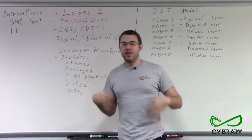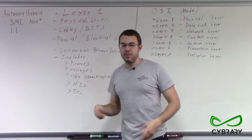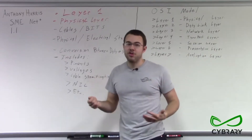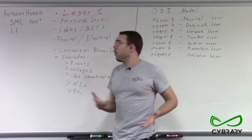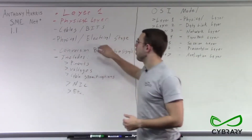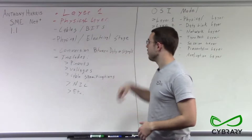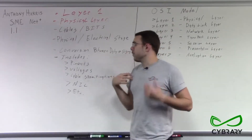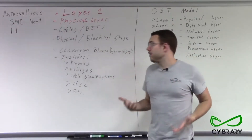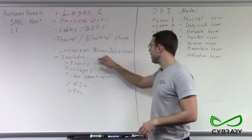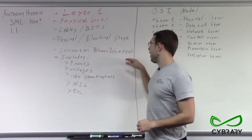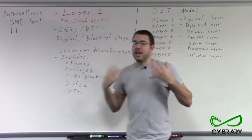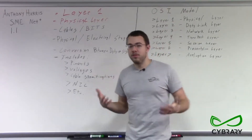Electrical impulses — electricity itself — are something physical, something that we can measure, so we consider them at the layer one level. This is where we start the conversion between our signals and our data, or from our data to our signals.